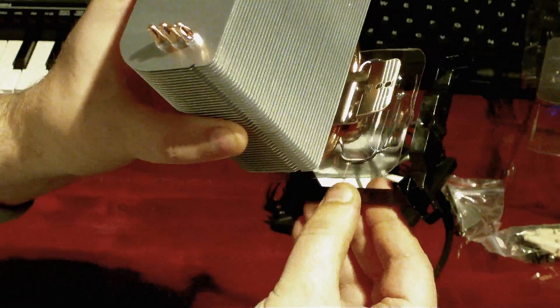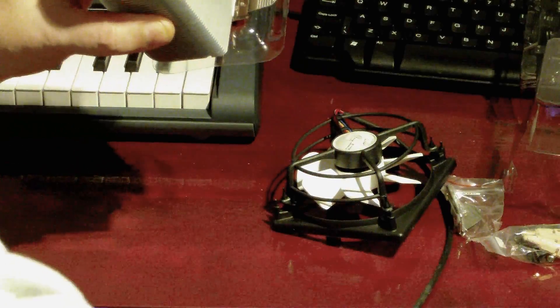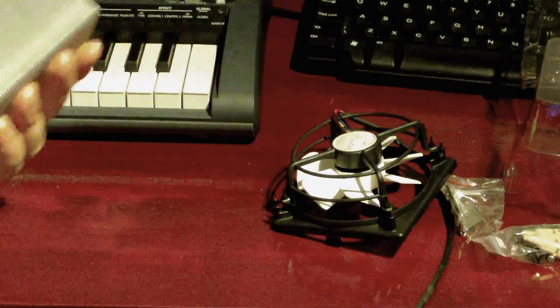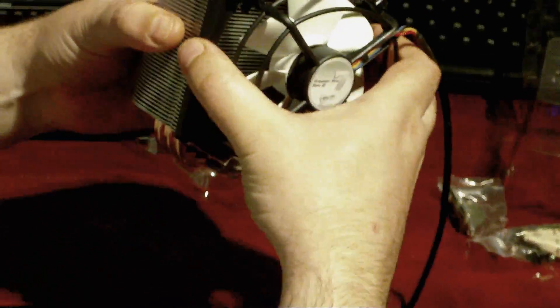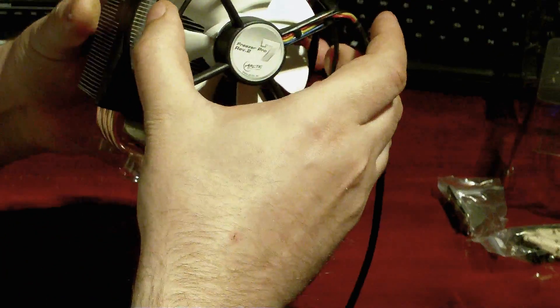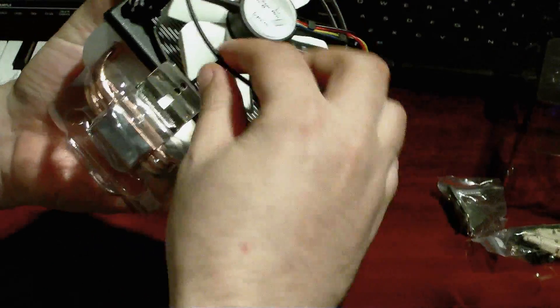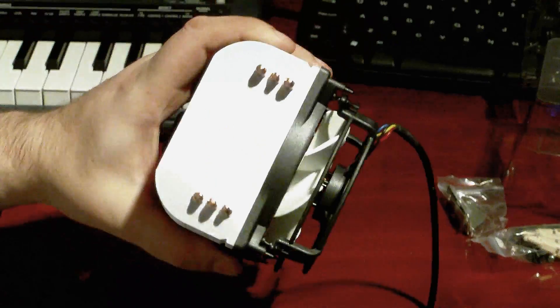And this mounting bracket sits underneath there and that screws straight down to it. But before you can mount it, like I say, you've got to take the fan off. So, let's put that back on a second. That goes back on easily enough. The fan's mounted on rubber grommets as well, which is fantastic for noise reduction. So you could have this spinning really fast and not much noise.